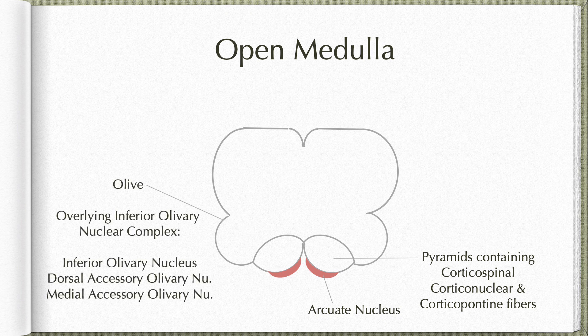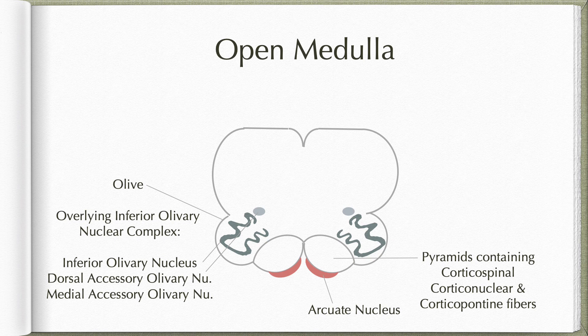The olive overlies the inferior olivary nuclear complex, which is made up of the inferior olivary nucleus — the largest of the nuclei there — a dorsal accessory olivary nucleus which is dorsal to the inferior olivary nucleus, and a medial accessory olivary nucleus which is medial to the inferior olivary nucleus.